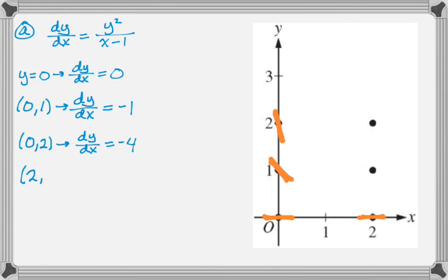At (2,1), I get dy/dx is positive 1, so I'm again aiming, I'm at the point (2,1), aiming at the point (1,0), which gives me that. And then at (2,2), I'm going to get positive 4. So I'm going to aim at the point (3, half, 0), I guess, which would give me the slope that I want.